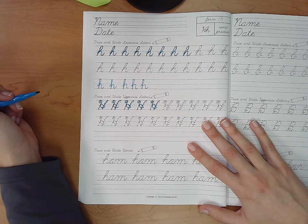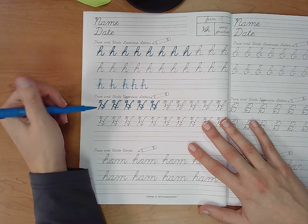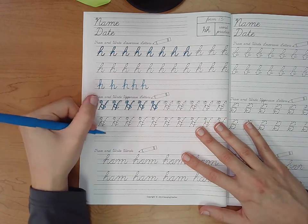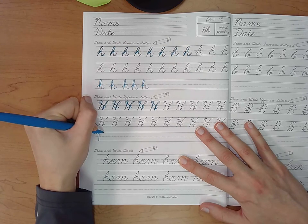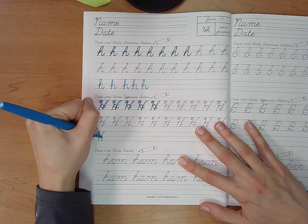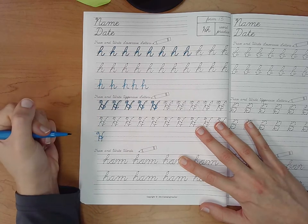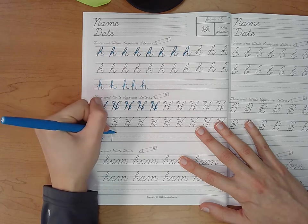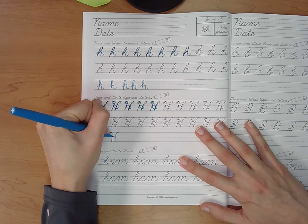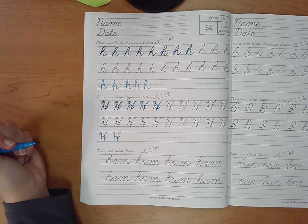If you need to watch that a couple of times, that's totally fine. Make sure you do all of your tracing h's, and then you'll do all of your h's on your own as well. Take your time with this. It will take a couple of tries just to get it right. No worries. Remember, you can draw it without the curlicue as well.